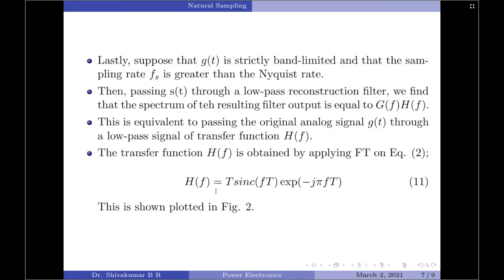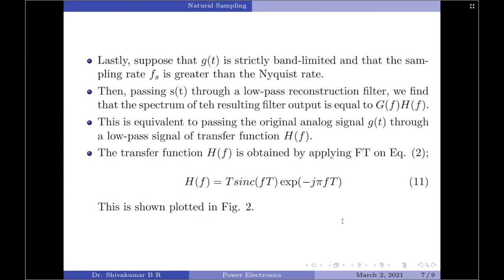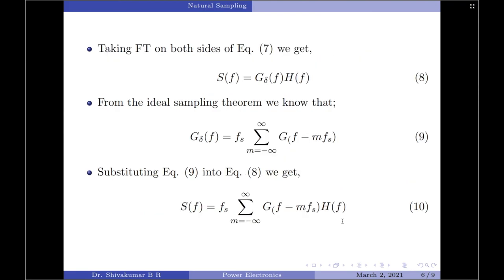When I look at the equation for H(f), the exponential term is only the delay term. So only T times sinc(fT) should be considered, meaning the magnitude of H(f) is simply 1 divided by T times sinc(fT). Since sinc(x) equals sin(πx)/(πx), we can write sinc(fT) equals sin(πfT)/(πfT). To conclude on the flat top sampling procedure: flat top sampling introduces both amplitude and delay distortion. However, by including an equalizer in cascade with the low pass reconstruction filter, this distortion can be mitigated.